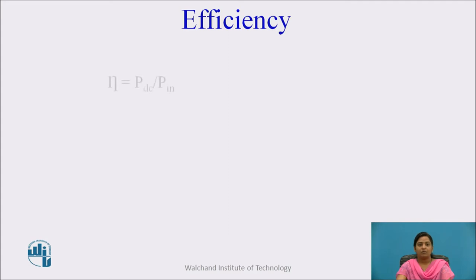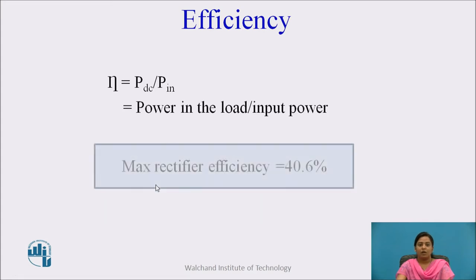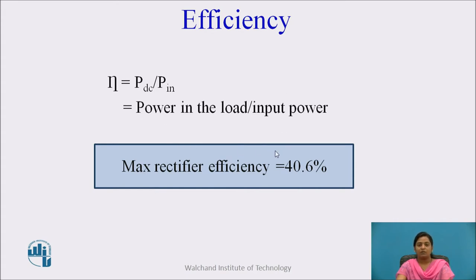Next is efficiency. The efficiency of a half wave rectifier is the ratio of DC output power to AC input power, expressed as PDC upon Pac. The efficiency of a half wave rectifier is equal to 40.6%, meaning the half wave rectifier is capable of converting AC into DC only for 40.6%.